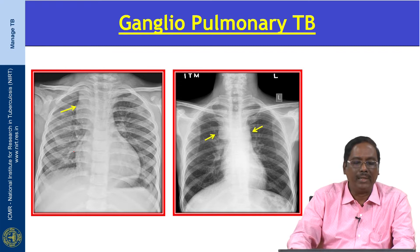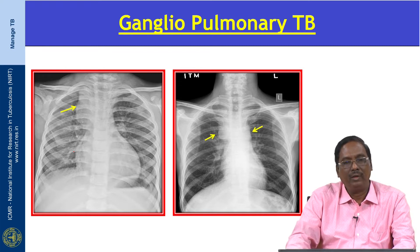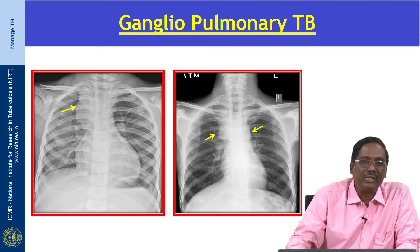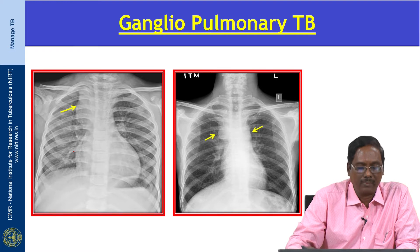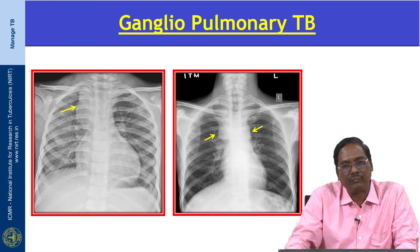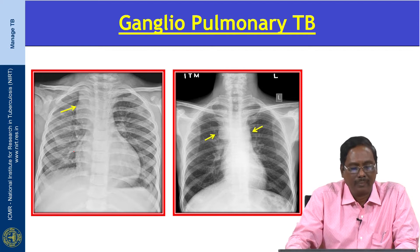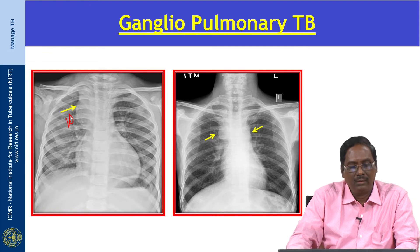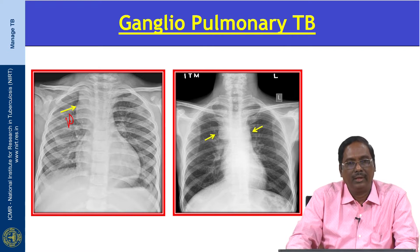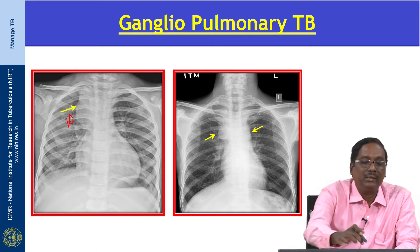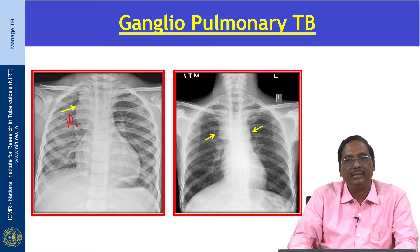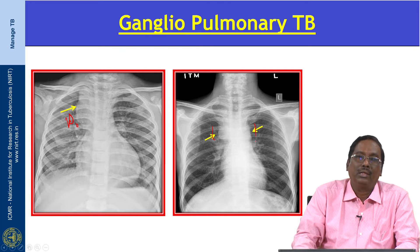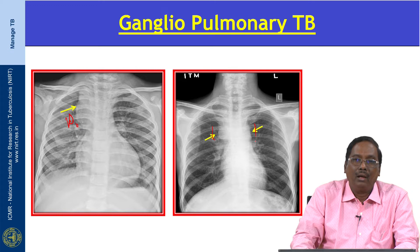Ganglionic pulmonary TB is characterized by enlargement of the mediastinal and hilar lymph nodes with associated parenchymal abnormality. This differentiates primary TB from post-primary tuberculosis. It is seen in 96 percent of children and 46 percent of adult patients. The commonly involved nodes are right paratracheal, hilar, subcarinal, aortopulmonary, and in the Indian population the right paratracheal is the most common. Bilateral adenopathy is seen in only 3 percent of cases. This image shows a right paratracheal lymph node seen in primary TB.